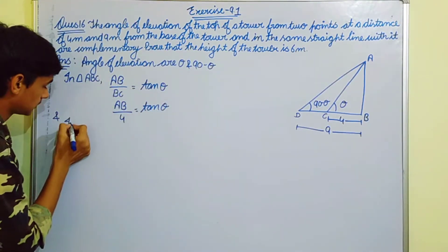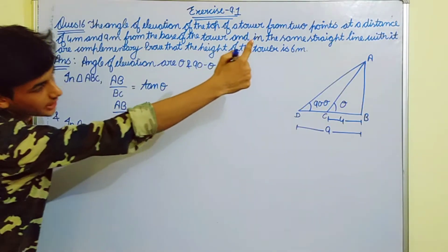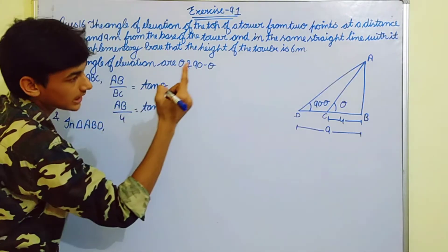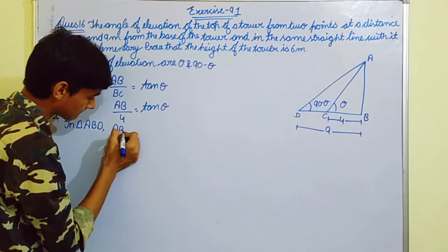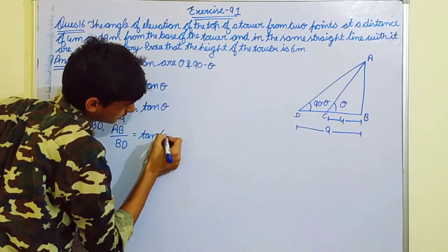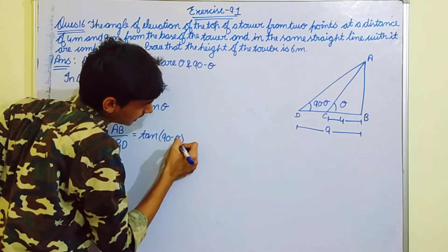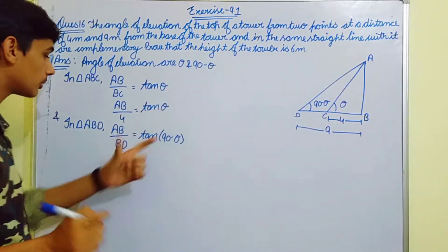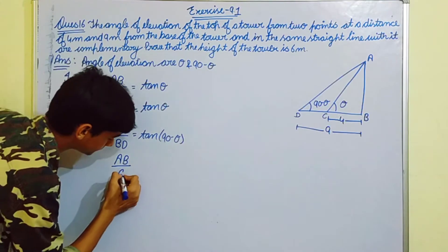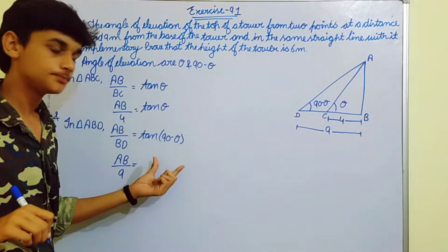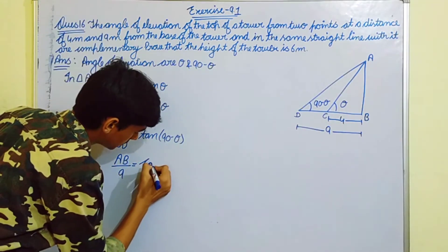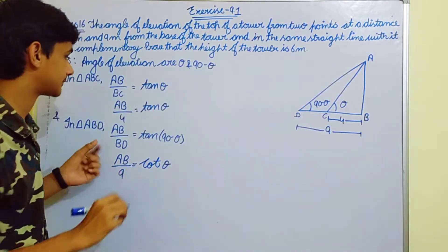Now in triangle ABD, the complete triangle ABD, AB upon BD is tan of angle ABD which is 90 minus theta. AB ki value we don't know. BD ki value is 9. This equals tan 90 minus theta. Tan 90 minus theta is cot theta.